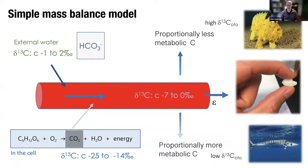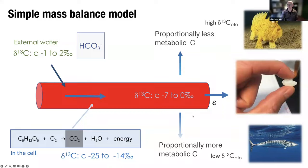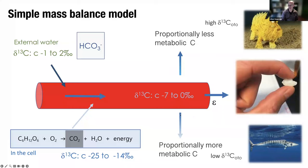These two carbon sources mix in the blood. Because the total carbonate concentration of the blood must be held constant to maintain pH, as the rate of production of respiratory carbon increases, the proportion of respiratory carbon in the blood — and thus the otolith — increases. Because of the isotopic separation between these two carbon sources, we can calculate the proportion of respiratory carbon in the otolith from a simple mass balance. The higher the metabolic rate, the more respiratory carbon incorporated, and the lower the otolith delta-13C value.